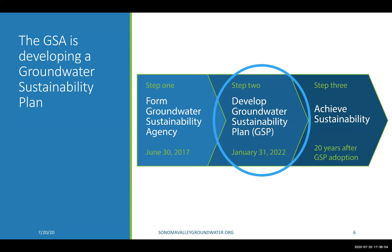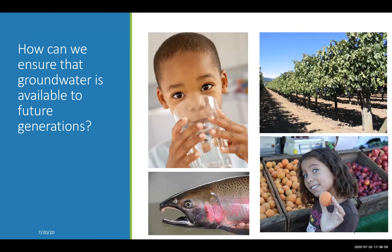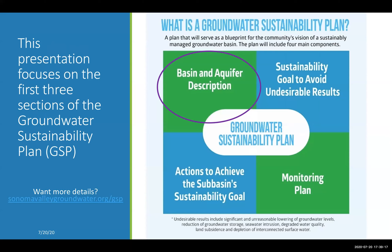The goal of SGMA and the plans is to ensure that groundwater is available today and into the future for all users — including rural residents, farmers, businesses, and the environment. Draft sections one and two of the plan have been completed, and most of section three is complete. In 2020 the GSA will finish sections three and four, with the full final draft planned for release in fall 2021. Full details and access to all draft figures can be found at sonomavalleygroundwater.org.